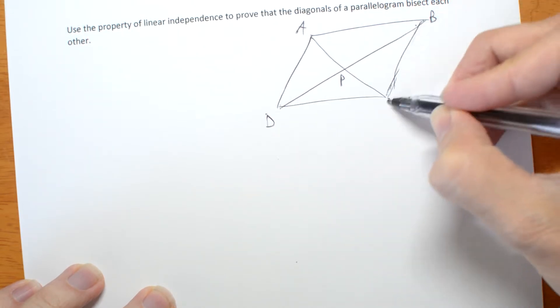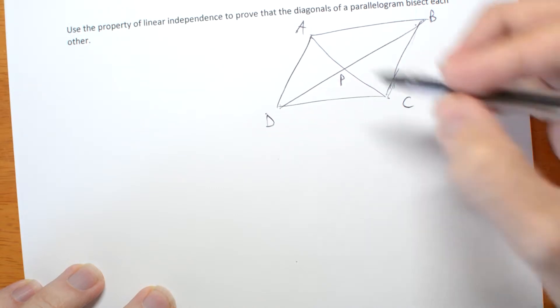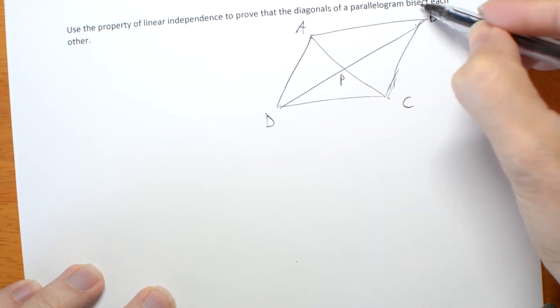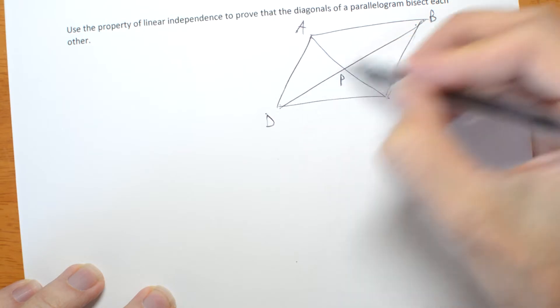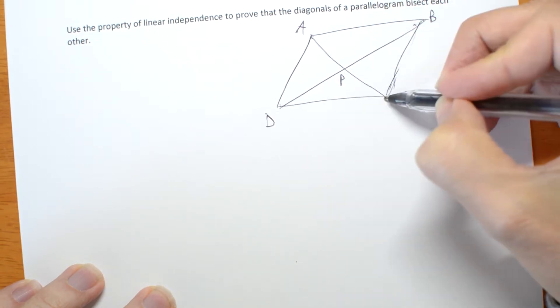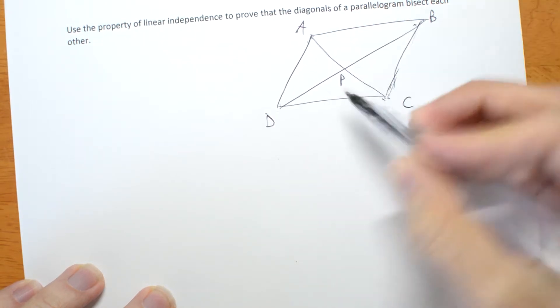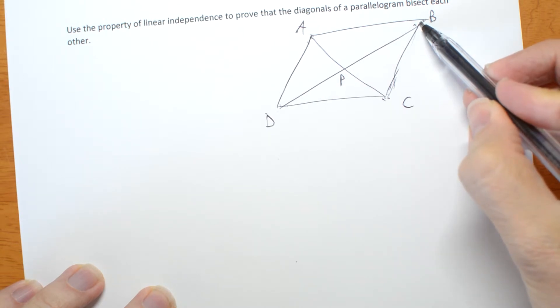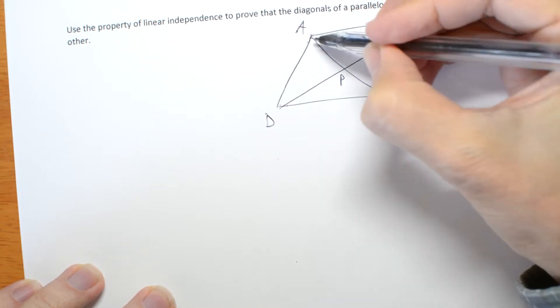As it turns out we're going to be going this way but it doesn't really matter. Bisect means this diagonal exactly cuts that one in half and this diagonal exactly cuts that one in half. To prove that I'm going to start by not assuming that it's exactly a half. So consider AP.